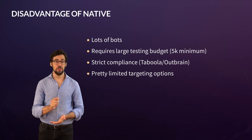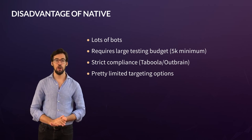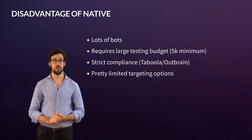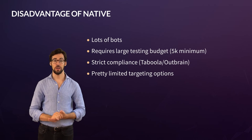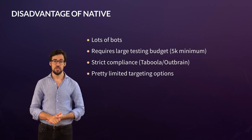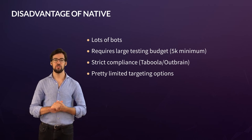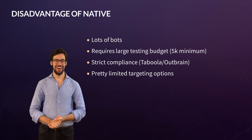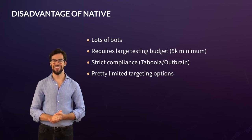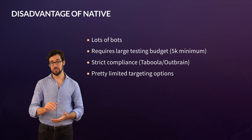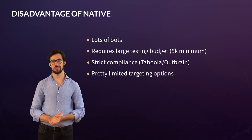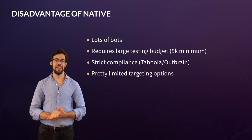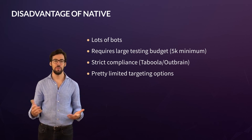Native can have very strict compliance. Taboola and Outbrain right now are maybe even more strict than Facebook or Google, so you need to be super white-hat on those networks. Rev Content, Content.ad, and GetContent are much more open. Also, there are pretty limited targeting options in comparison to Google search or Facebook.